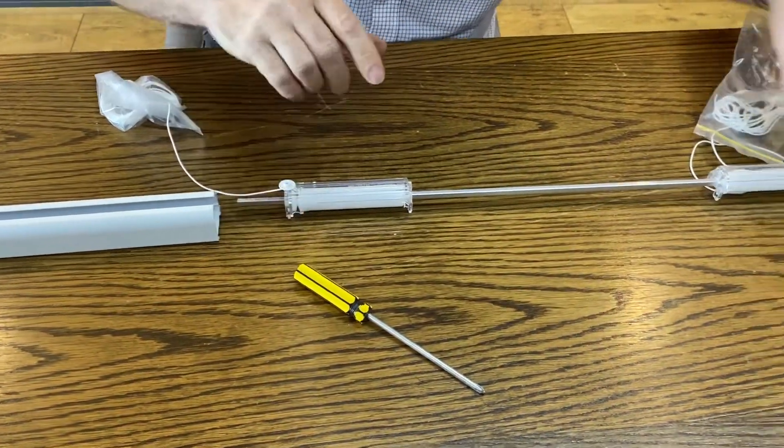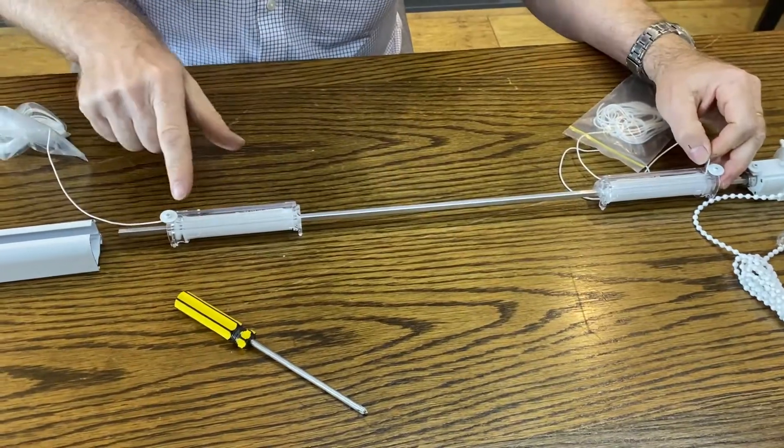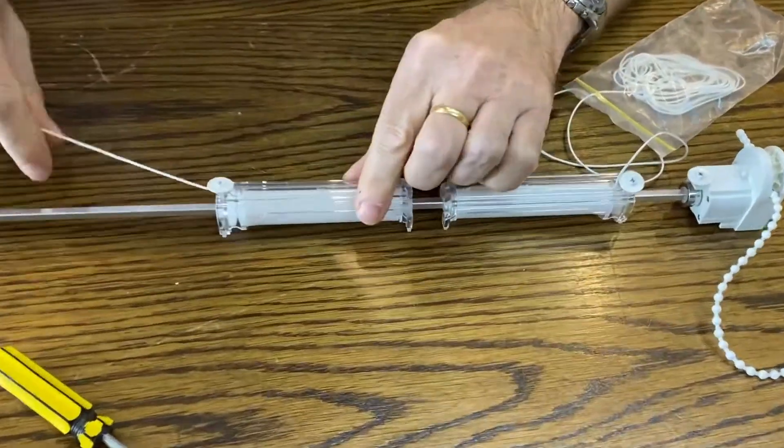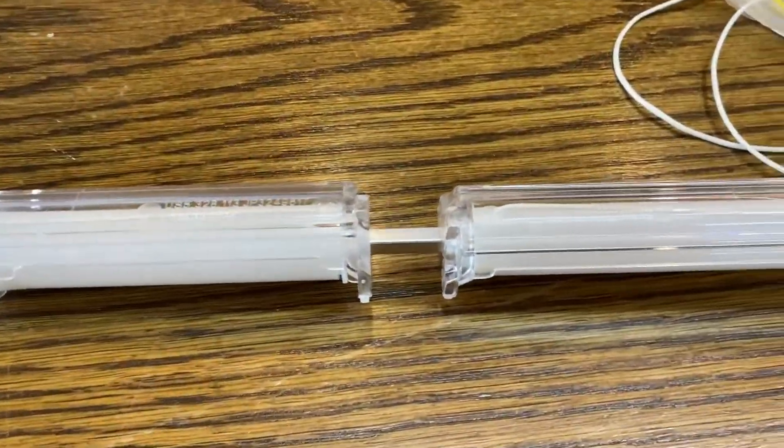Once you've got them on the drive bar, whether it's two, three, or four, just double check again that all the cords are running straight.